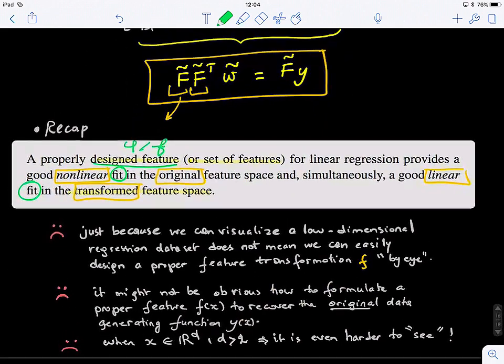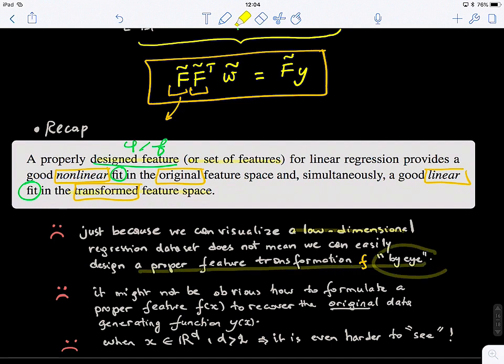Okay, so this is what I just said, so let me just go over it quickly. So just because we can visualize a low-dimensional regression data set does not mean that we can easily design a proper feature transformation F by just by looking in a high-dimensional space. And also, it might not be obvious how to formulate a proper feature F of X to recover the original data generating from the function, because we don't know which function actually fits the data or approximates it. And also, when we have a high-dimensional feature vector, we have many features, right? It's even harder to see which features, what is the relationship between each of those features or all of them together with the target output.